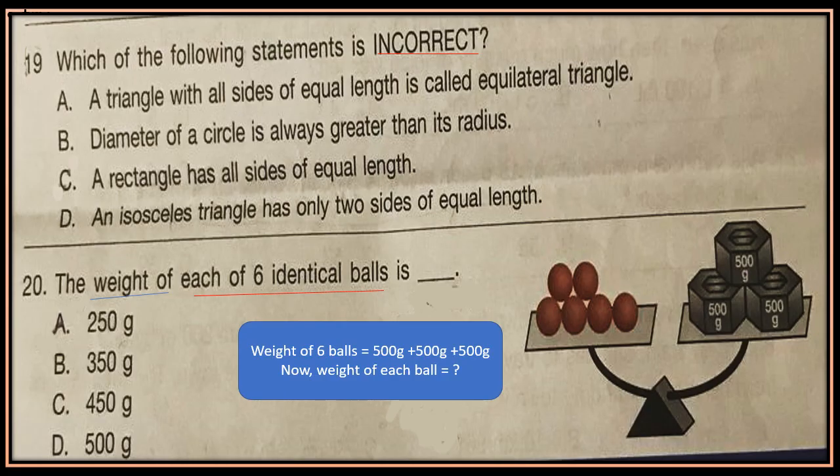Question 19: Which of the following statements is incorrect? A: A triangle with all sides of equal length is called an equilateral triangle. B: The diameter of a circle is always greater than its radius. C: A rectangle has all sides of equal length. D: An isosceles triangle has only two sides of equal length. Select the incorrect option.